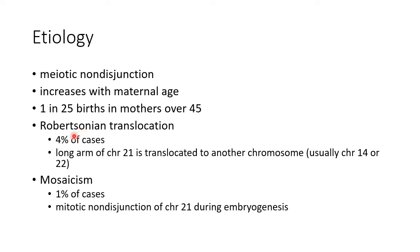Robertsonian translocation accounts for 4% of cases. In this, the long arm of chromosome 21 is translocated to another chromosome, usually chromosome 14 or chromosome 22, leading to Down syndrome. Mosaicism accounts for 1% of cases, where there is mitotic non-disjunction of chromosome 21 during embryogenesis leading to Down syndrome.